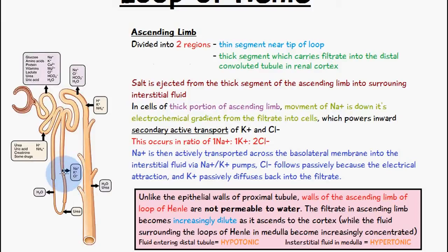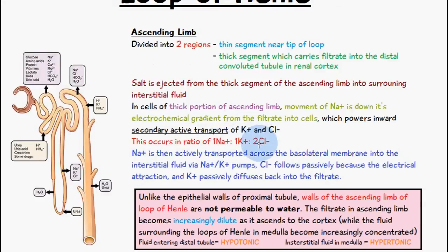Once the sodium ions move out, it powers secondary active transport. Because the sodium ions move into the cells of the ascending limb, it becomes slightly more positive, so to balance it, chloride ions and potassium ions are also going to move in. This powers the movement of chloride and potassium to follow after sodium, and the ratio at which this occurs is one sodium ion per two chloride ions per one potassium ion.